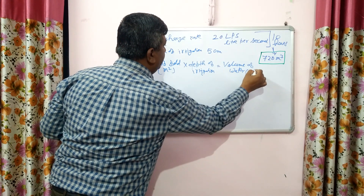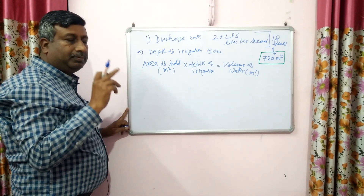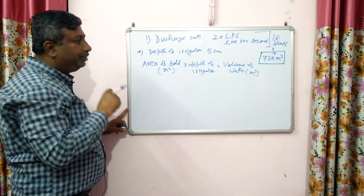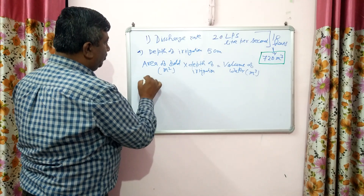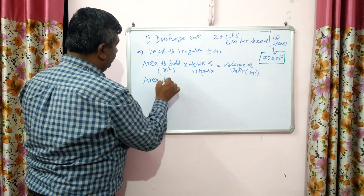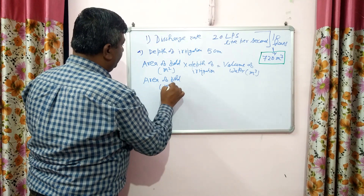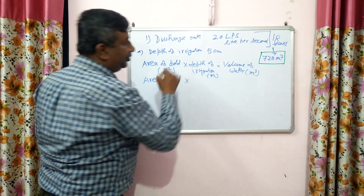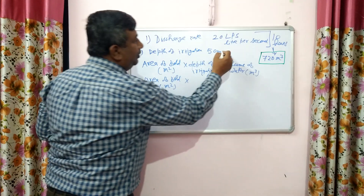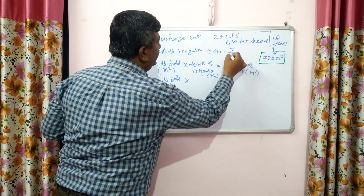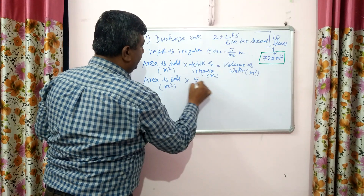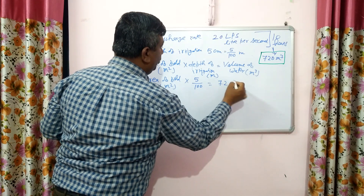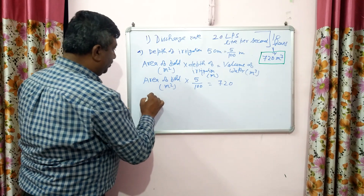Remember to be careful: the volume of water must be in cubic metres, not in litres — convert litres into cubic metres. We have to calculate the area of the field. Area of field is in square metres and depth of irrigation is in metres, so convert 5 centimetres: it is 5/100 metres.